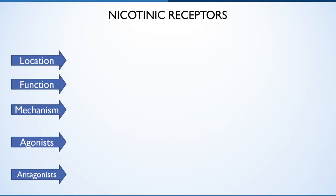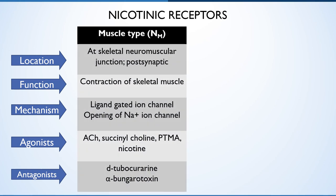The nicotinic receptors: first, the muscle type. N-M receptors are located at the skeletal neuromuscular junction and function for contraction of skeletal muscle. These are from the family of ligand-gated ion channels. When a specific agonist binds to them, it opens and allows influx of sodium ions, causing depolarization and contraction of the muscle. Specific agonists are acetylcholine, succinylcholine, phenyltrimethylammonium, and nicotine. Antagonists are tubocurarine and bungarotoxin.